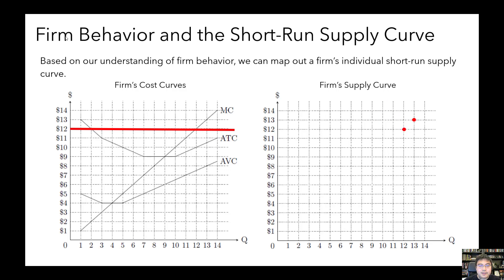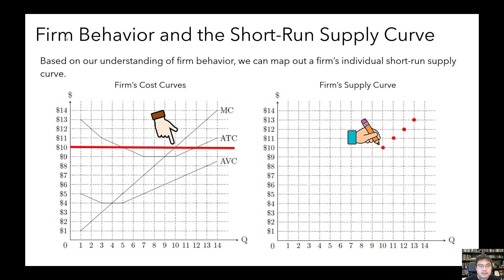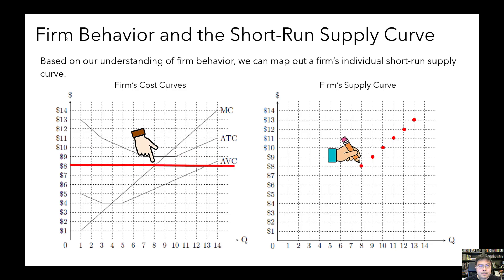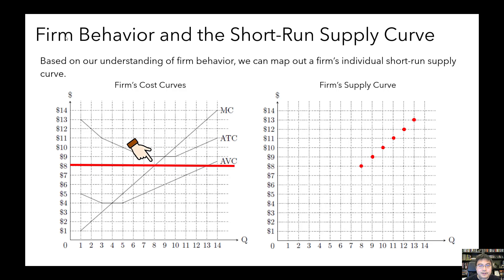Now we can repeat this process for each price level: $11, $10, $9, $8. Quick quiz — at a price of $8, what's happening to the firm? That's right, the firm is making short-run losses, because the price is below the average total cost curve. But it's still choosing to continue to produce in the short run because the price is still above the average variable cost.